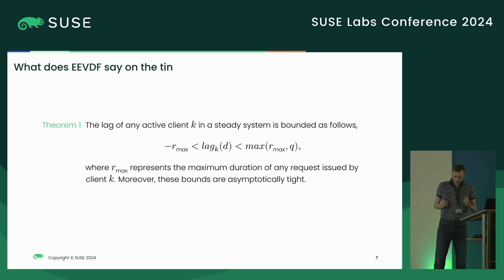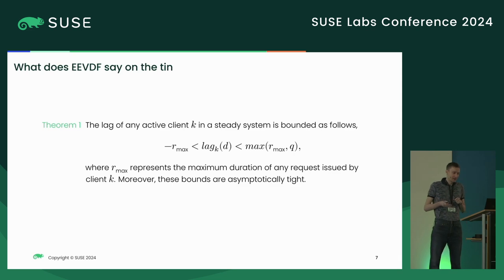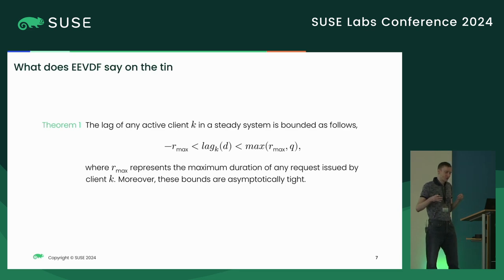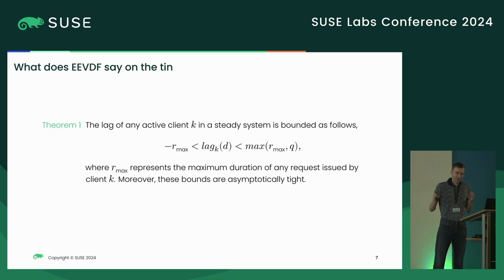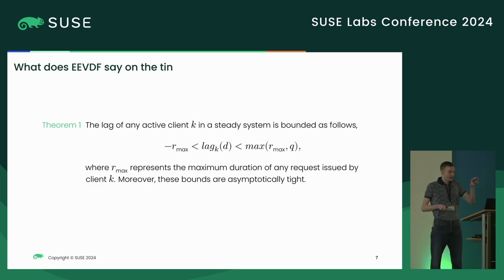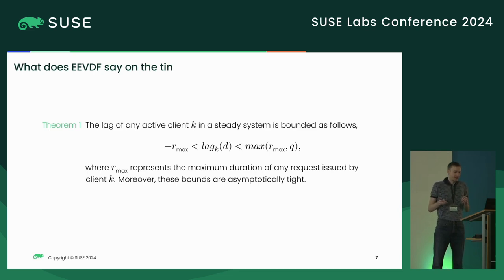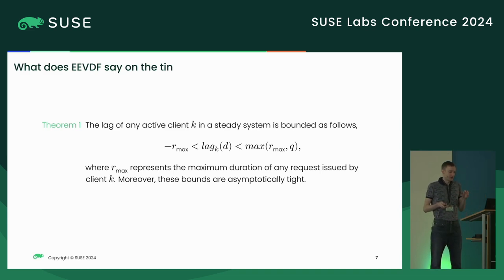Now, EEVDF. There is a paper and its main theorem states that the lag of a task at a certain moment in time is bounded by boundaries related to the quantum of the scheduler. I present the theorem first and then explain the definitions and consequences — the proof is in the paper and spans several pages.